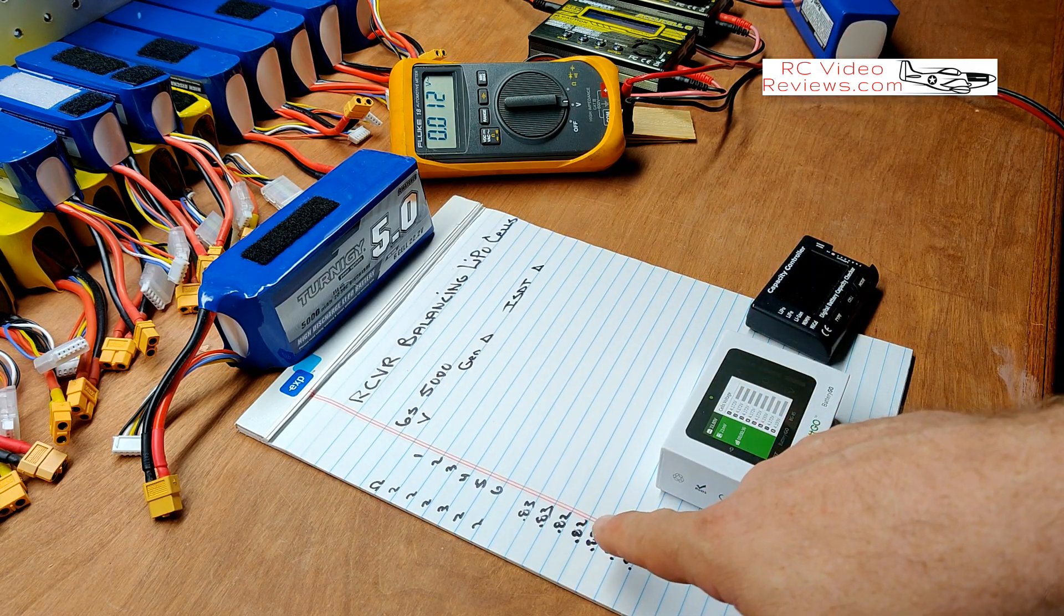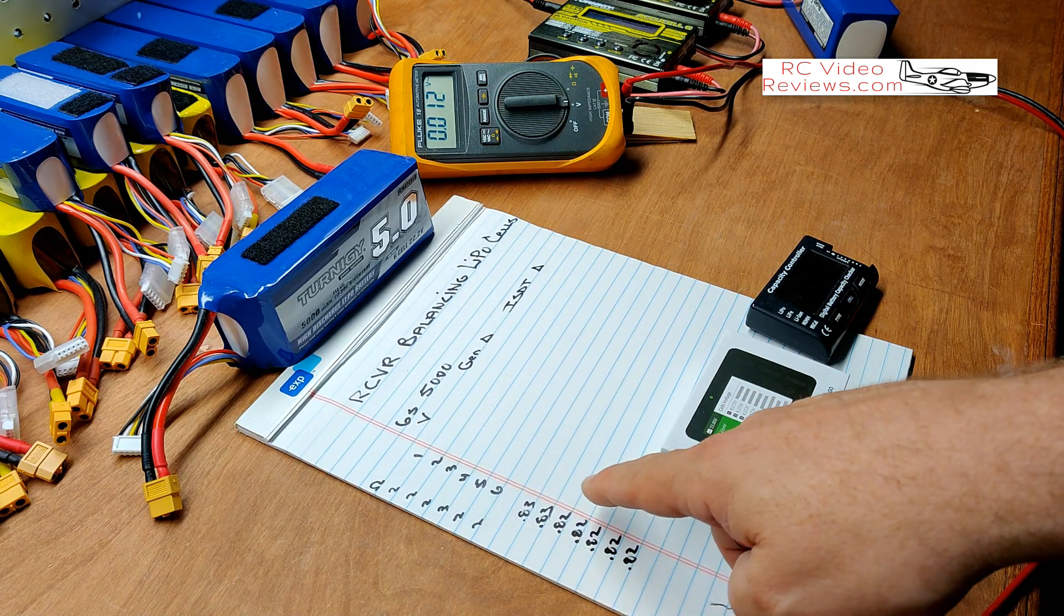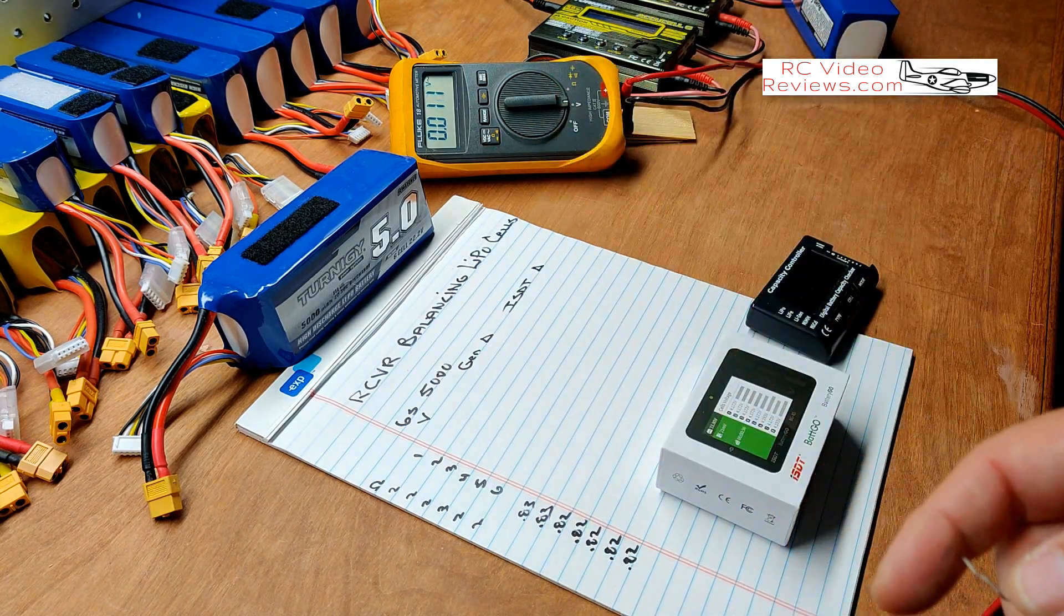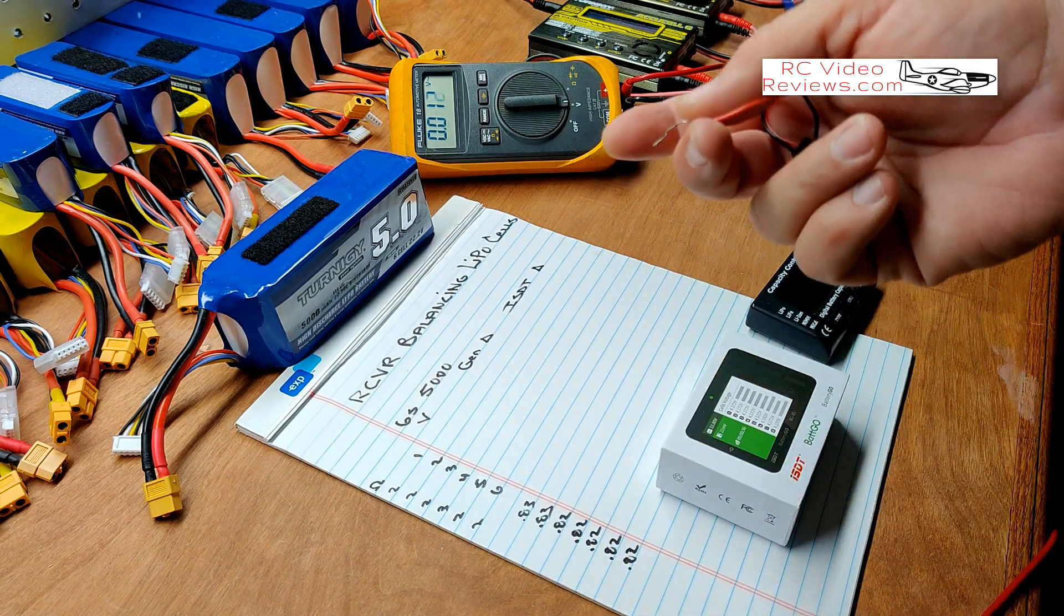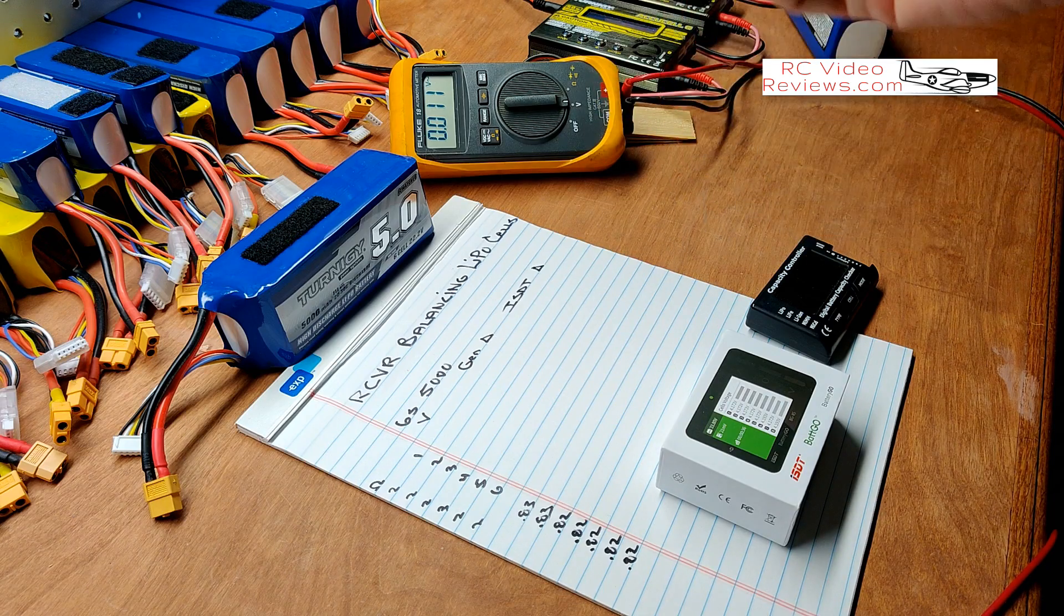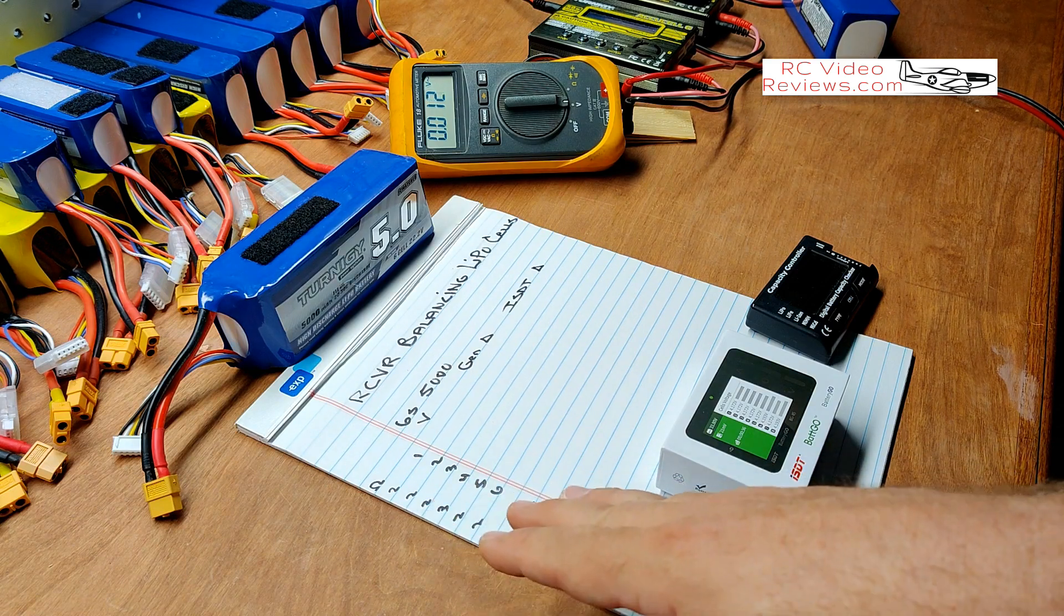And then as far as the voltage goes, this pack's been in storage. It's 3.83, 3.83, and then the rest of the cells are 3.82. So according to the iCharger, this is a very well-balanced cell. I mean, we're off a hundredth of a volt on two cells, and those two are the same. And my IR is the same.